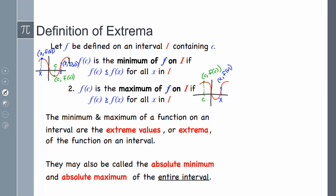The first definition we're going to go over is the definition of extrema — the same definition given in pre-calculus. If I have some function on some interval with a beginning and an end, and value c is defined, then f(c) is the minimum if on that interval the y-value is smaller than or equal to every other y-value. Likewise, f(c) is the maximum if that y-value is the largest of all other y-values. The minimum and maximum of a function on an interval are the extreme values, or the extrema.